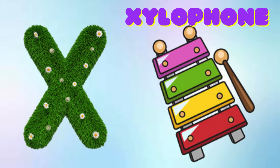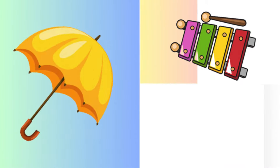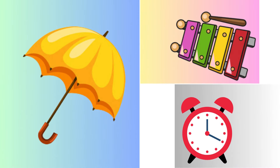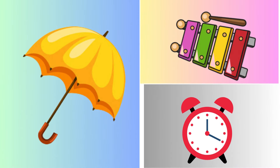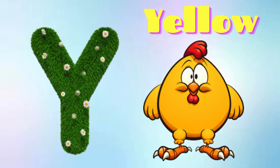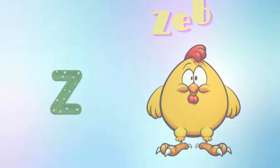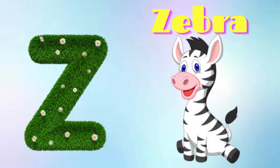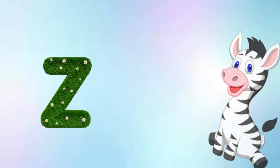X is for Xylophone, X-X-Xylophone. Y is for Yellow, Y-Y-Yellow. Z is for Zebra, Z-Z-Zebra.